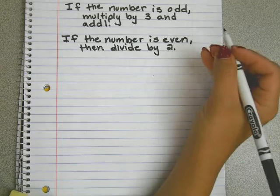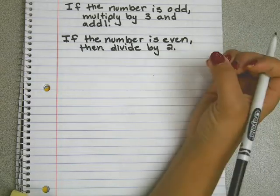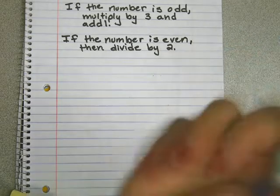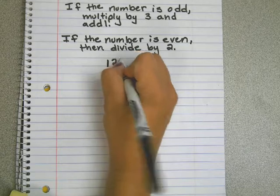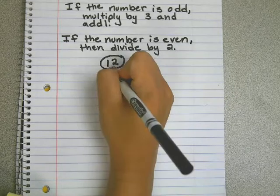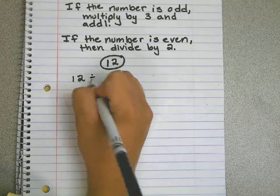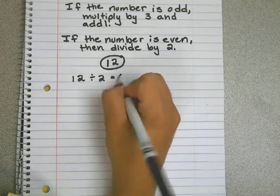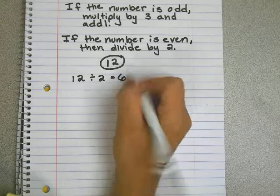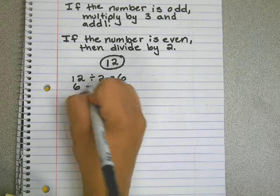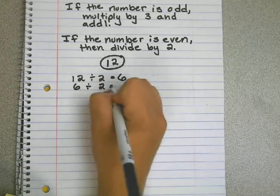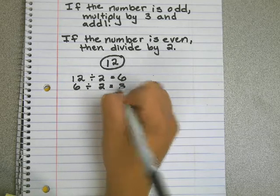So first, you're going to have them pick any number. Let's say I pick twelve. Twelve is even, so we're going to divide by two and we get six. Six is even, so we're going to divide by two and get three.